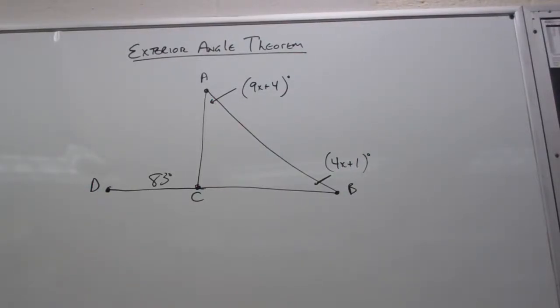Alright, one way we can find missing angle measures in triangles is to use the exterior angle theorem. And the exterior angle theorem tells you that the measure of an exterior angle is equal to the sum of its remote interior angles.